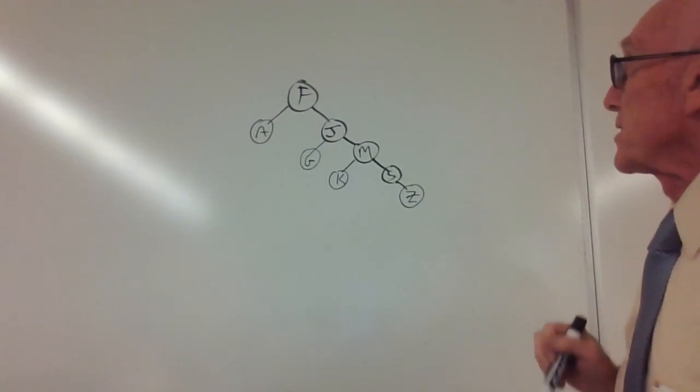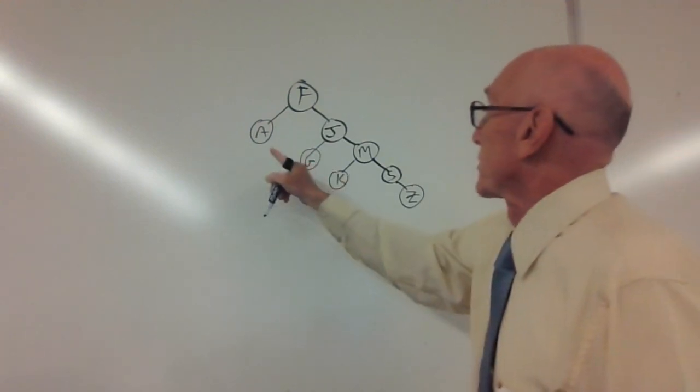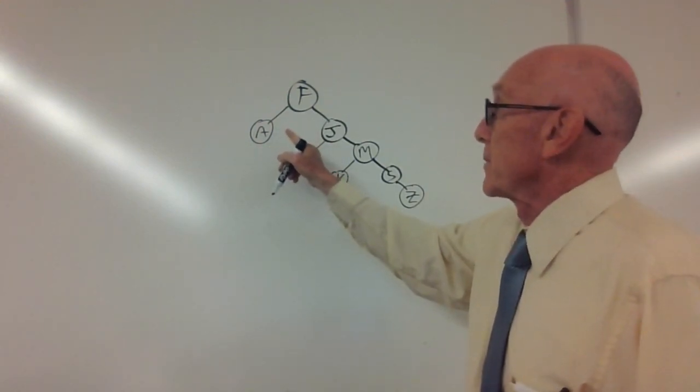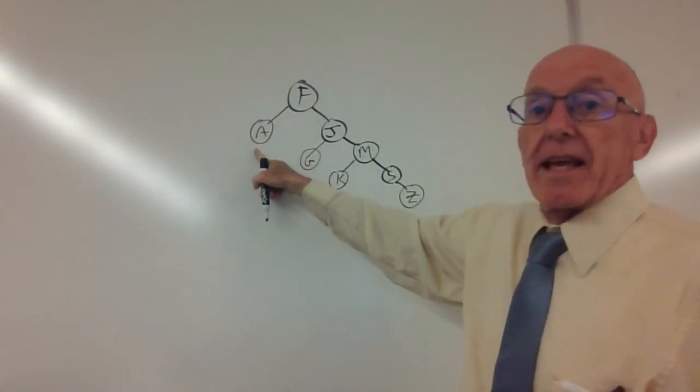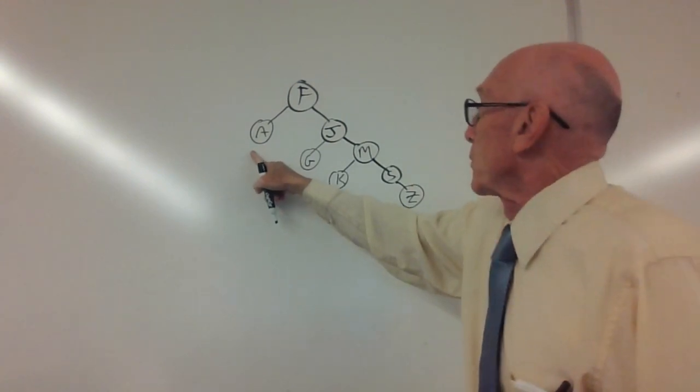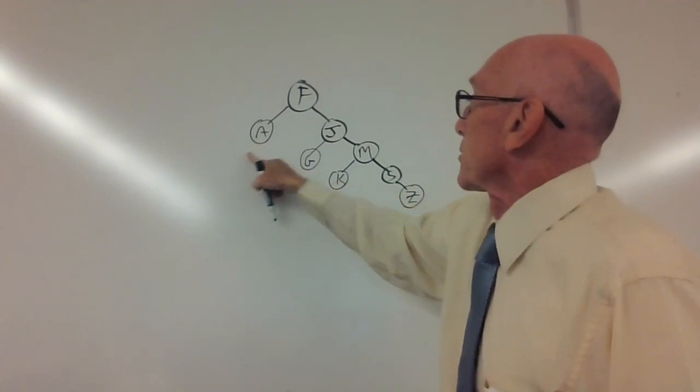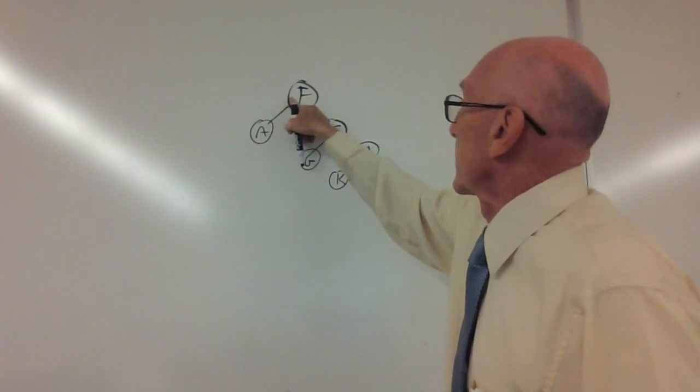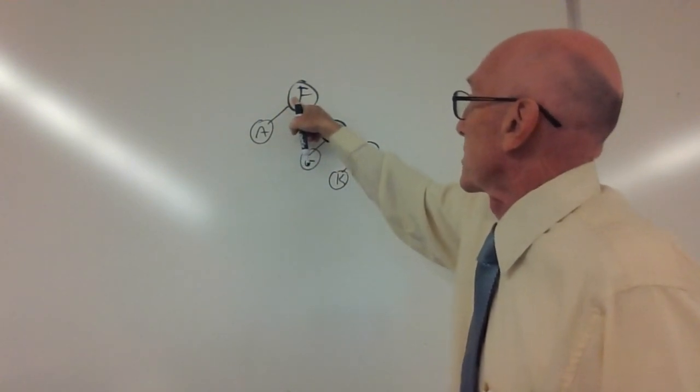Now, what does the iterator do? The iterator starts by going to the smallest item in the tree, which is A. Then we go and look for the successor. Because there are no children here, we have to go up to F and get that as a successor node.